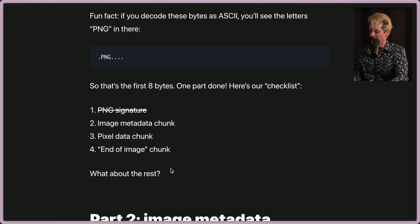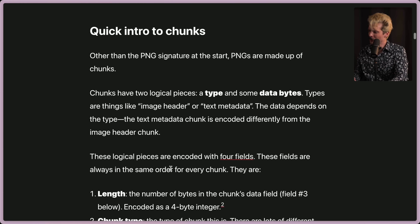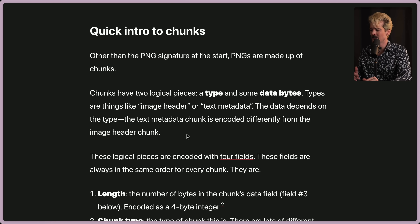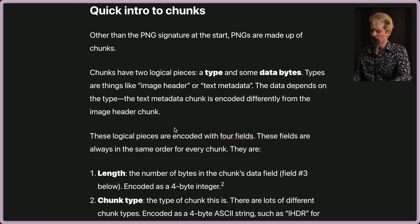The next part of the PNG is the image metadata, which is one of several chunks. What's a chunk? Quick intro to chunks: other than the PNG signature at the start, PNGs are made up of chunks. Chunks have two logical pieces — a type and some data bytes. Types are things like image header or text metadata. The data depends on the type. The text metadata chunk is encoded differently from the image header chunk. These logical pieces are encoded with four fields, always in the same order for every chunk.